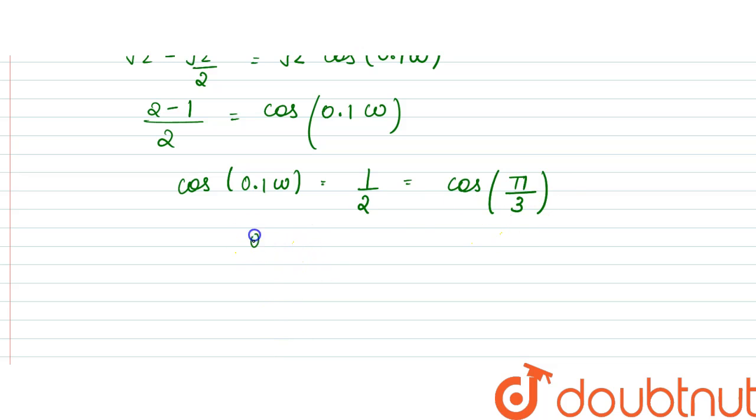So here, 0.1 omega, omega by 10 can be written as pi by 3, so omega would be equal to 10 pi by 3.